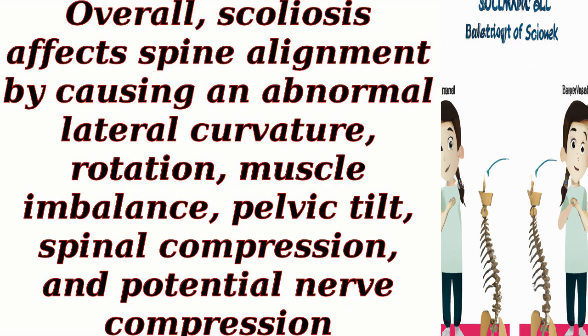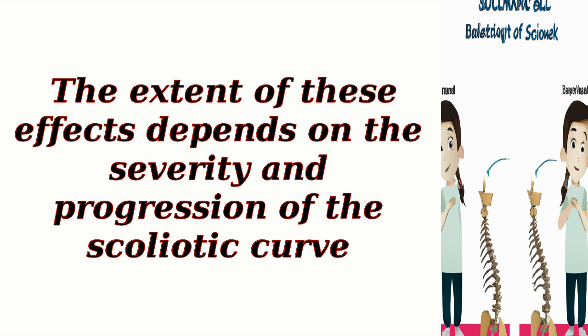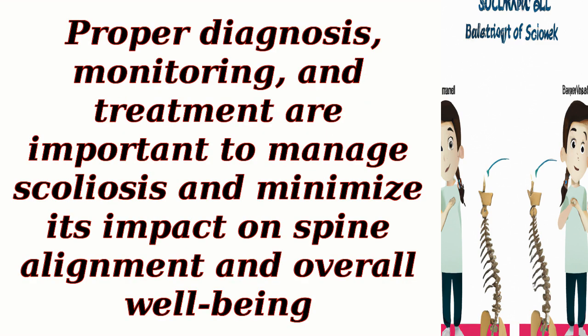Overall, scoliosis affects spine alignment by causing an abnormal lateral curvature, rotation, muscle imbalance, pelvic tilt, spinal compression, and potential nerve compression. The extent of these effects depends on the severity and progression of the scoliotic curve. Proper diagnosis, monitoring, and treatment are important to manage scoliosis and minimize its impact on spine alignment and overall well-being.